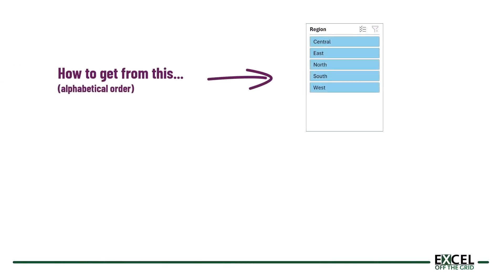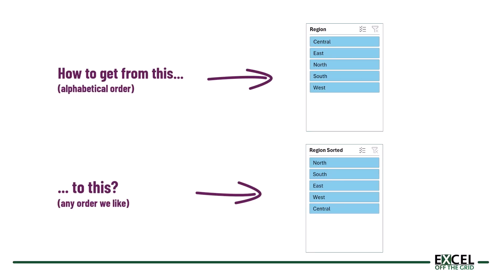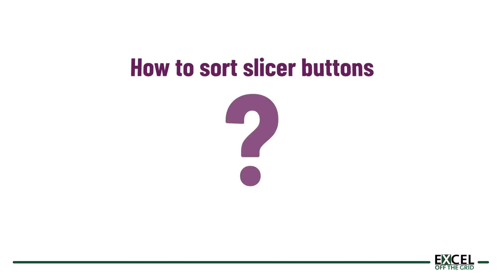But what if we want the buttons in the order of north, south, east, west, and central? That's not in alphabetical order. So how can we sort the slicer buttons in the order that we want? Let's go find out.